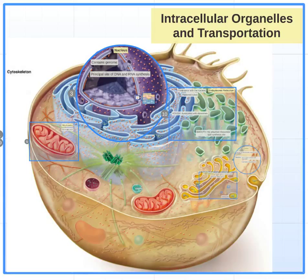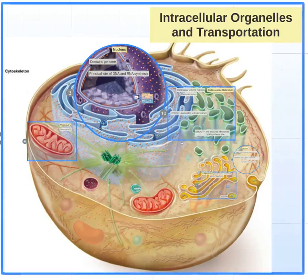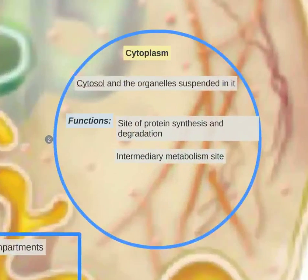In the second lecture, we will cover the basics of cell organelles and transport within the cell. The first thing we need to talk about is the cytoplasm, which includes the organelles suspended in it. It's also called the cytosol, mostly made of water, and it is the site of protein synthesis and degradation, and the site of glycolysis.